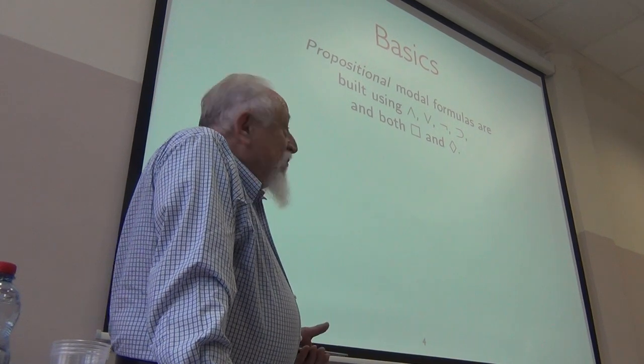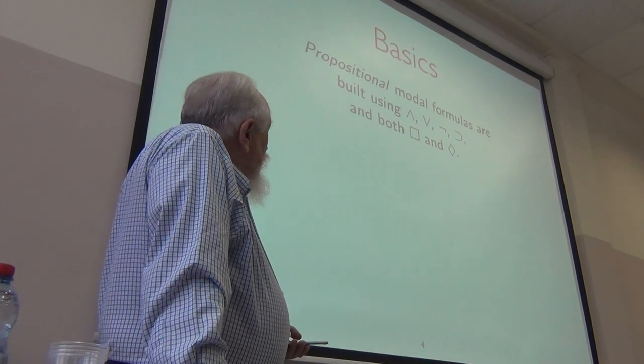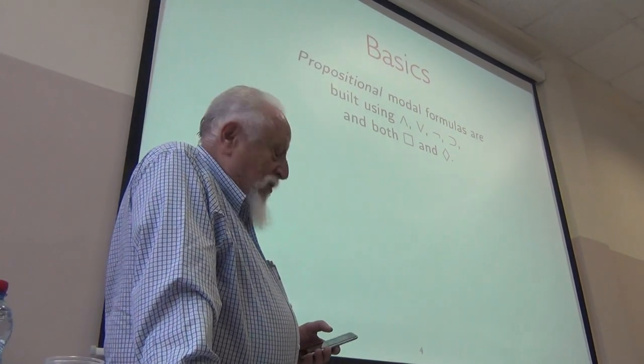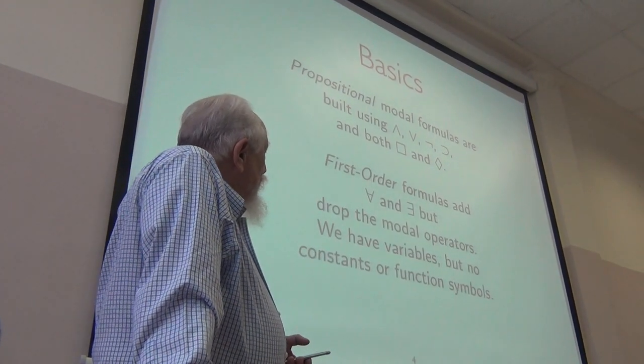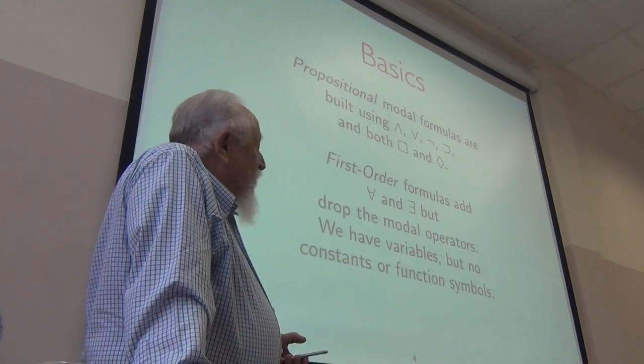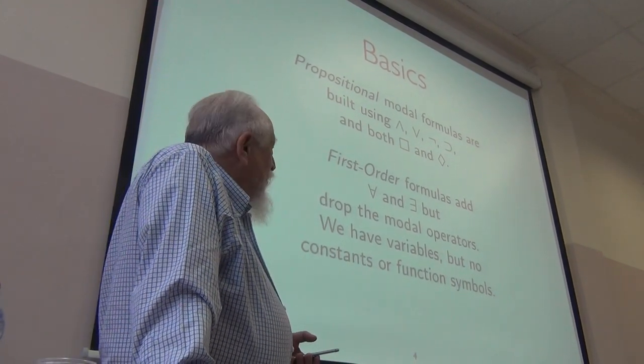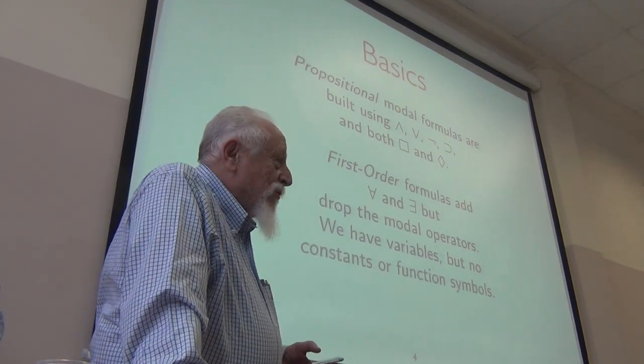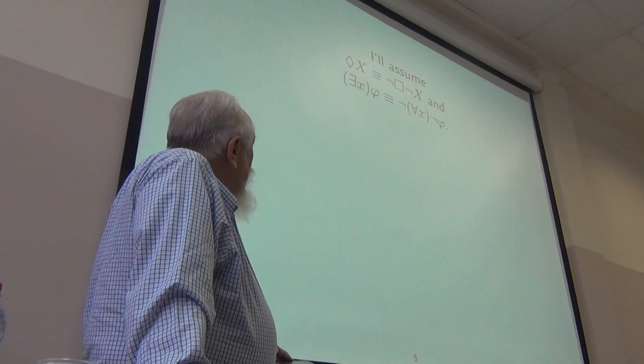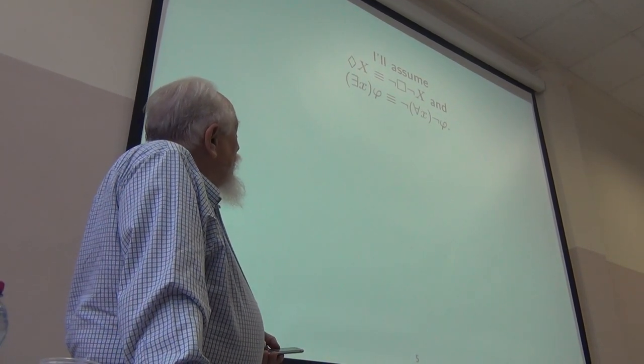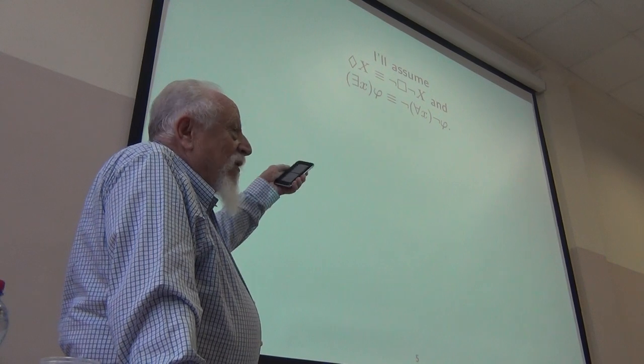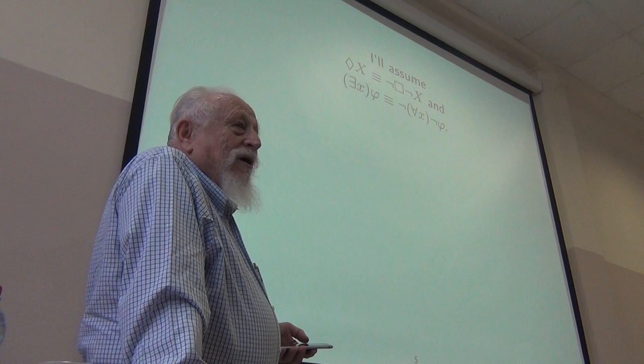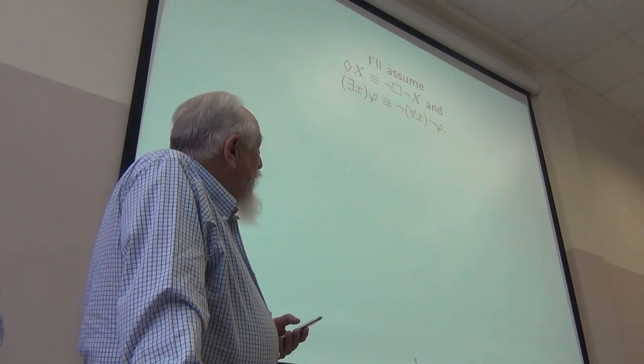All right, so the basics here. Just to set the notation, I'll assume the standard propositional connectives, I'll assume both box and diamond. At the first order level, I'll assume we have quantifiers, but not modal operators. Variables, but I won't bother with constants or function symbols. Generally speaking, I'll take diamond as defined from box this way, and exists as defined from all this way. So I don't have to give quite so many rules or axioms.